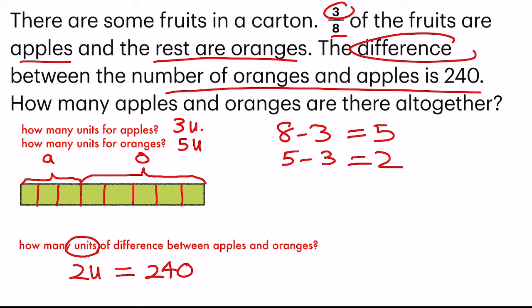So to answer the question, how many apples and oranges are there all together? We are just finding 8 units. And since we know that 2 units is equal to 240, we can just take 240, multiply by 4. And we get an answer of 960.